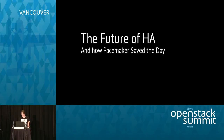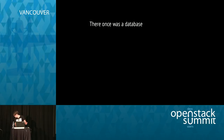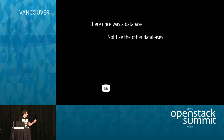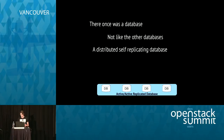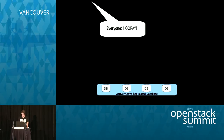To illustrate where we've come from and where we're going, I want to start with a story. The title is 'the future of HA and how Pacemaker saved the day' — and it rhymes. Once there was a database — a special, distributed self-replicating database. Everyone said this is exactly what we were looking for: fault tolerance built directly into the application. If one node goes down, the rest pick up the slack. No expensive shared storage. Everything just works.